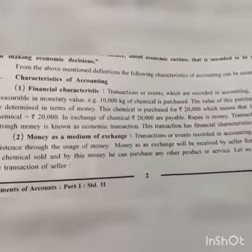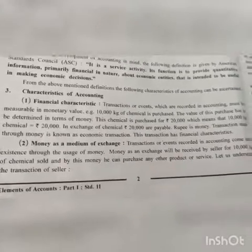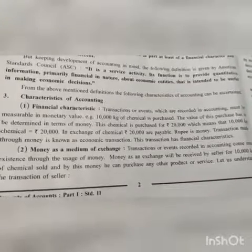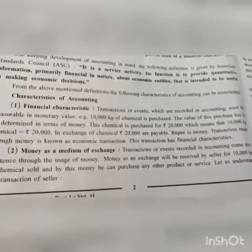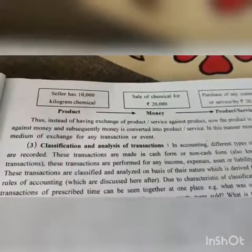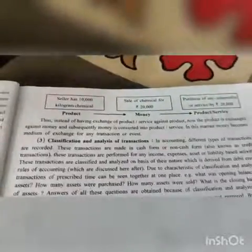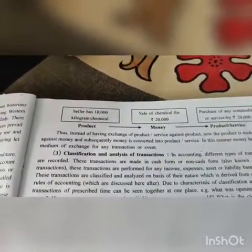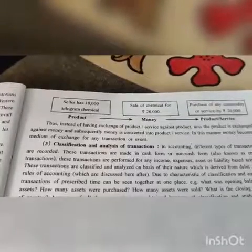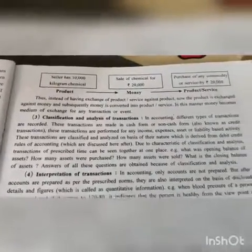Second characteristic: money as a medium of exchange. Transactions or events recorded in accountancy come into existence through the usage of money. The seller receives money for 10,000 kg of chemicals sold and can use that money to purchase any other product or service. So money is coming in and then the product or service — instead of barter exchange of product against product, now the product is exchanged against money and treated as a monetary transaction.